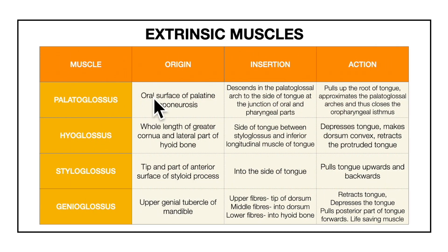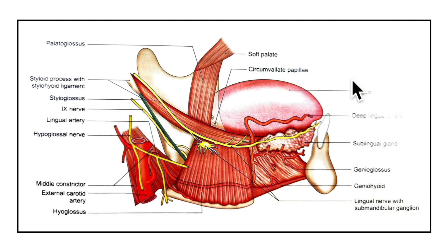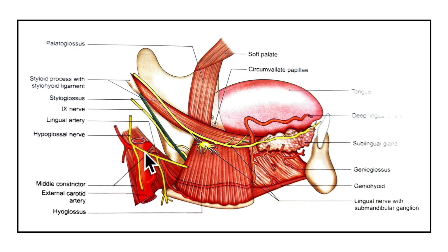Now let's learn about the arterial supply of the tongue. The arterial supply is derived from the tortuous lingual artery, which is a branch of the external carotid artery.